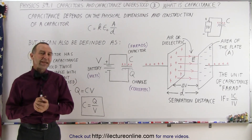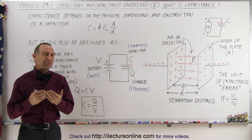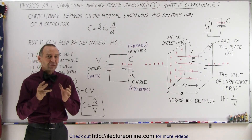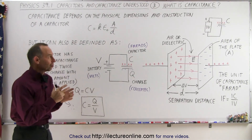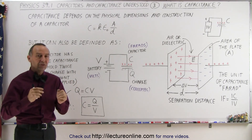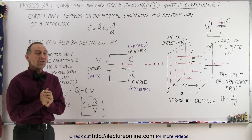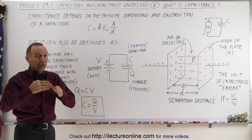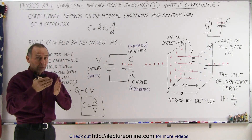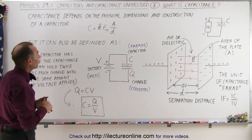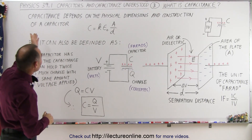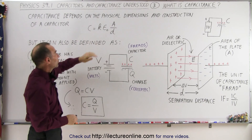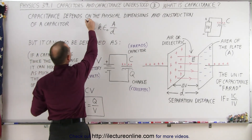Welcome to iLectroOnline. In the previous video we defined capacitance of a capacitor based upon its physical construction: the size of the plates, the separation distance between the plates, and the kind of material that is between the plates, either air or some other dielectric. So we can say that the capacitance depends on the physical dimensions and construction of a capacitor, and here's the equation that we use to define that.